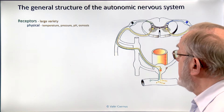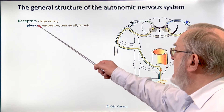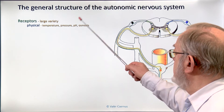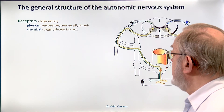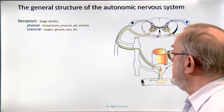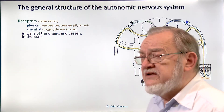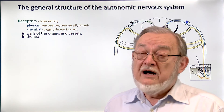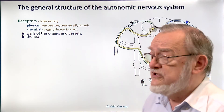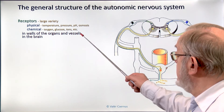Let's go through these steps. The receptors are of large variety; they can measure exact data on physical parameters like temperature, pressure, pH, osmotic concentration, and chemical parameters such as oxygen and glucose concentration. These receptors are relatively simple in structure. We have very little information about them; they are located in the wall of organs and vessels, and some in the brain — especially the chemoreceptors, which measure the chemical composition of the blood.